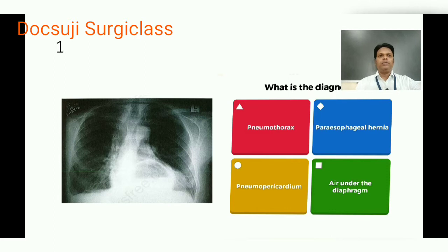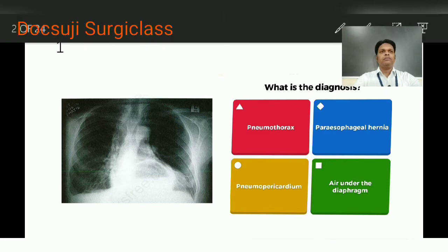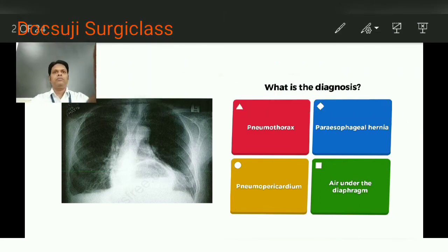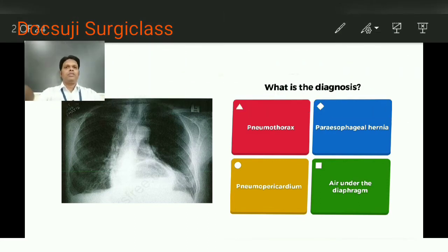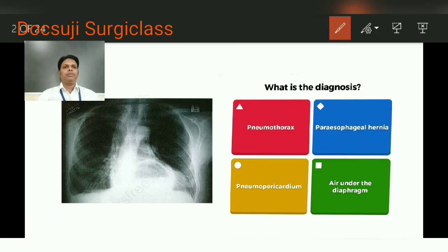What is the diagnosis? Here you can see the chest X-ray on the left side. There are four options given: number one is pneumothorax, number two is paraesophageal hernia, number three is pneumopericardium, and number four is air under the diaphragm.